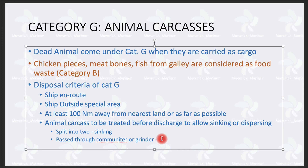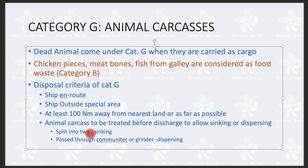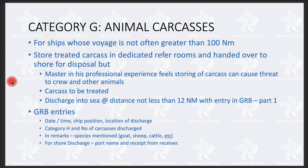Alternatively, ships carrying a huge amount of livestock will be equipped with a comminuter and grinder. Comminuting means grinding the carcass into a paste. If we grind it into paste and discharge it, it will disperse in the water — that is the method for dispersing. So remember these four points: ship must be en route, outside special area, at least 100 nautical miles from nearest land and as far as possible, and animal carcass must be treated before discharging to allow sinking or dispersing.